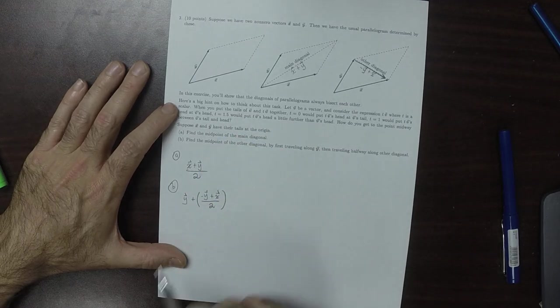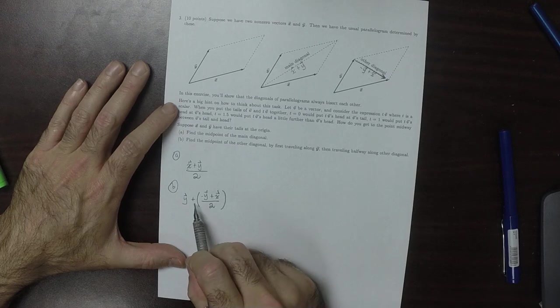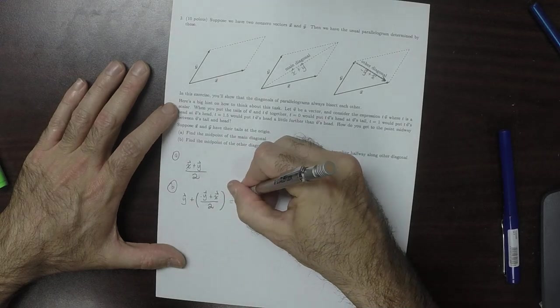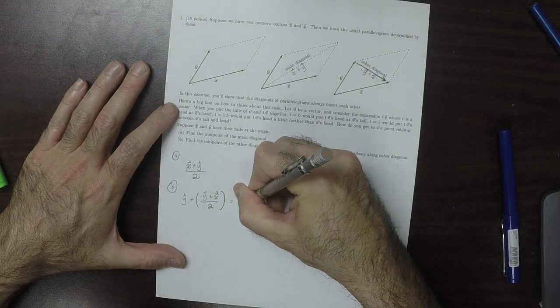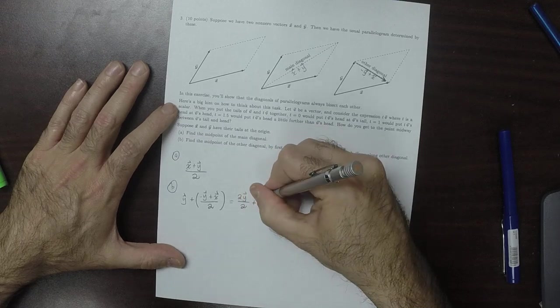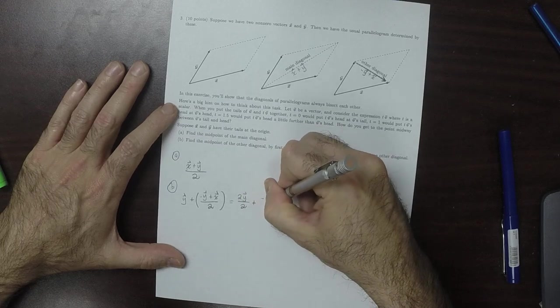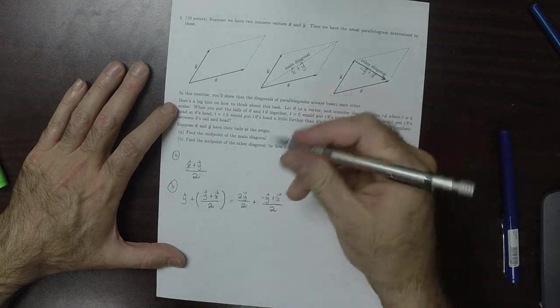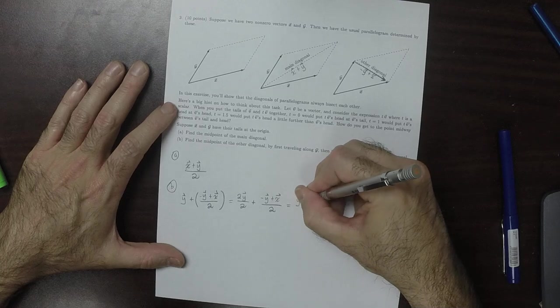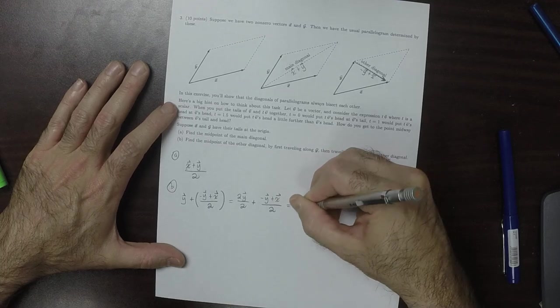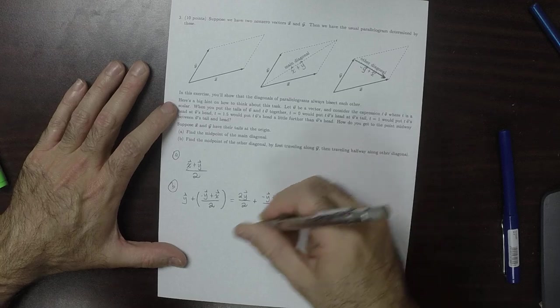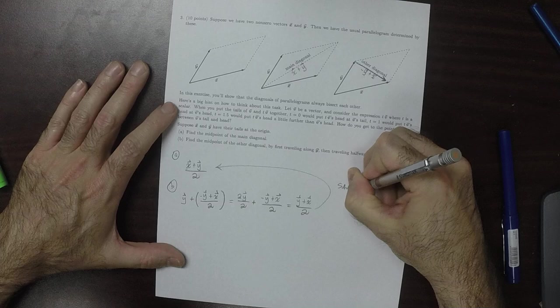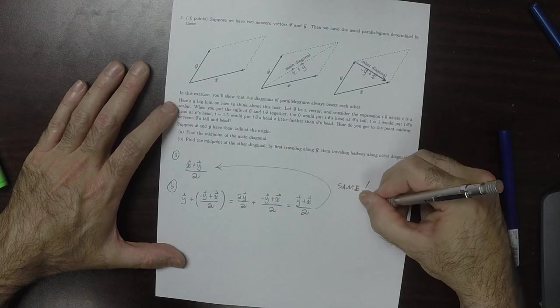And then simplifying this, simplifying this, this would be 2y over 2, and then plus negative y plus x over 2. And then add those together, that's y plus x over 2. And of course, these are the same.